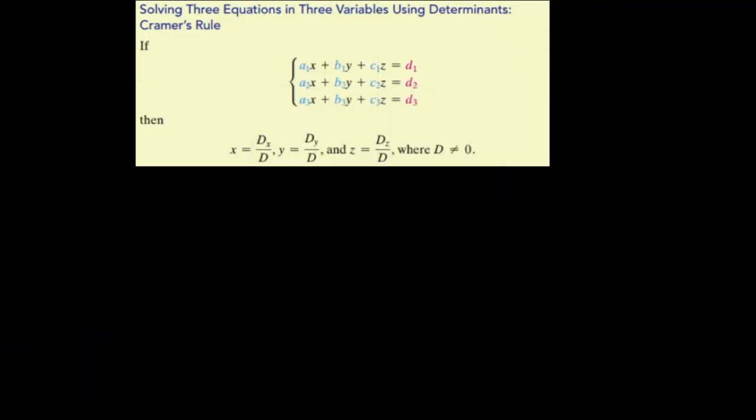We're going to use determinants to solve a system of equations — specifically a system of equations in three variables. These are all linear by the way. It could be two equations if you want, but I'm going to do three just to make it a little more difficult, and then you should be able to do twos. This is called Cramer's Rule: using determinants to solve a system of linear equations, and this in particular is three variables.